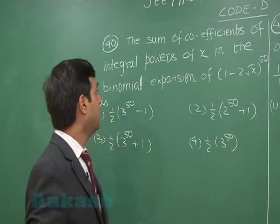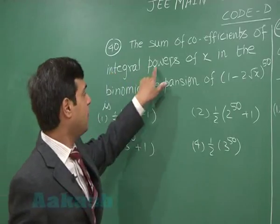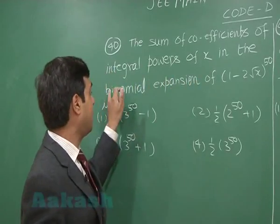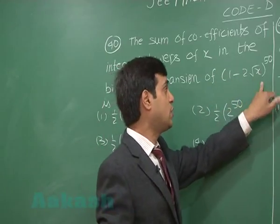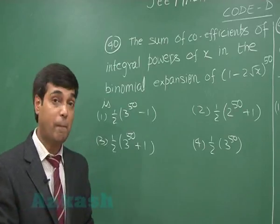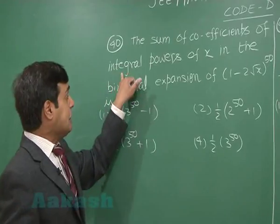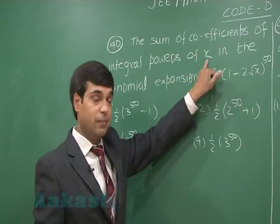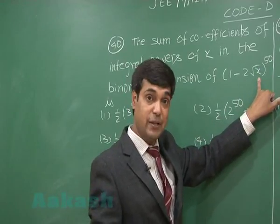Let us go to the next one. The sum of coefficients of the integral powers of x in the binomial expansion of (1 - 2√x)^50 is. So the question from binomial theorem, we are looking for integral powers of x here. In this bracket power of x is half, right? So we are looking for even powers in the expansion.